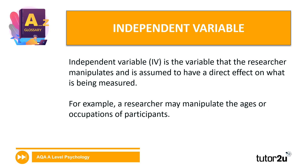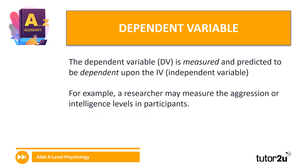So a researcher may, for example, manipulate the ages or occupations of participants. The key thing is that manipulation of the independent variable gives us the different conditions of our research. The dependent variable is the variable that we measure. We measure the DV because we expect any change in the independent variable to affect it — for example, measuring aggression or intelligence levels in participants.